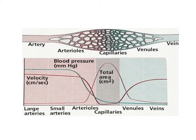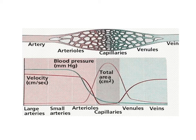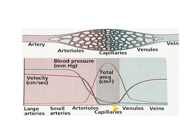The second graph in the diagram shows that velocity, or the speed of blood, decreases as blood moves from the arteries to the arterioles to the capillaries. The velocity begins to increase as blood moves from the capillaries to the venules to the veins. Blood moves the slowest through the capillaries, which is important as the exchange of nutrients and waste occurs between the capillaries and the cells of the body.